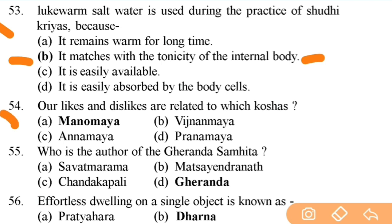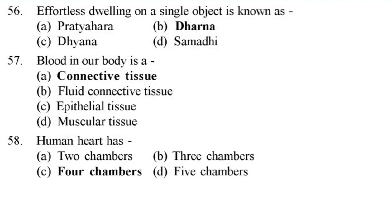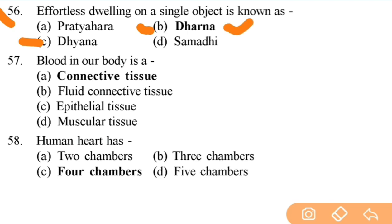Who is the author of Gherand Samhita? Maharishi Gherand. Next: effortless dwelling on a single object is known as — right answer is B — Dharana — very important and confusing question; many students mark Dhyana but the right answer is Dharana. Next: blood in our body is a connective tissue — important question.